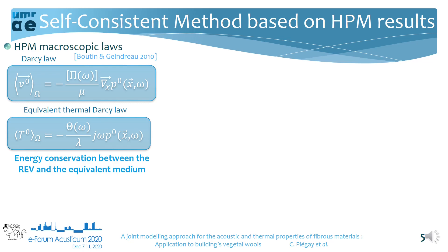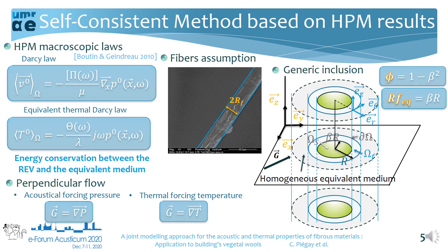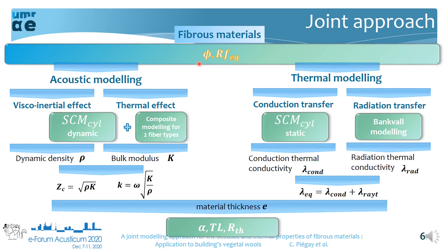To get closer to a simplified morphology of fibrous medium microstructure, the fibers are assimilated to a cylinder of constant radius over its entire length, as shown for a vegetal fiber in this SEM picture. We consider a generic inclusion composed of a solid cylinder inside a fluid cylinder. This generic inclusion can be described by just two parameters: the porosity and an equivalent fiber radius. These two parameters are the only input data of the joint modeling approach for the acoustic and thermal properties of fibrous materials.